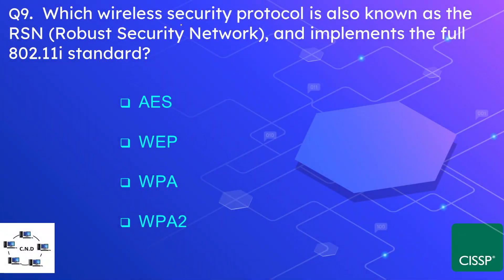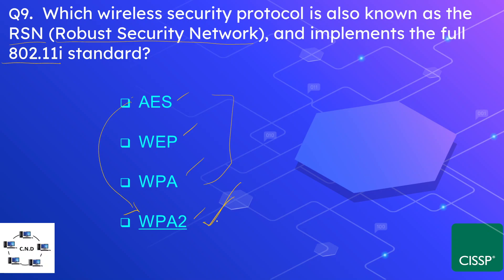Question number nine: which wireless security protocol is also known as RSN or Robust Security Network, and implements the full 802.11i standard? The options are AES, WEP, WPA, and WPA2. The correct answer is WPA2. WPA2 is the latest and strongest of these algorithms, implementing AES for confidentiality and additional protocols for authentication.